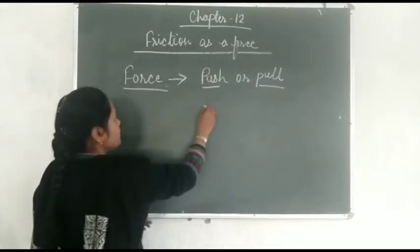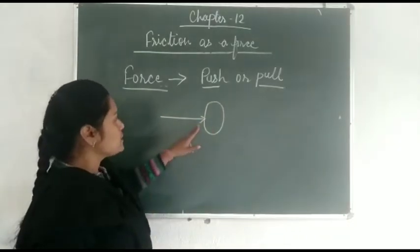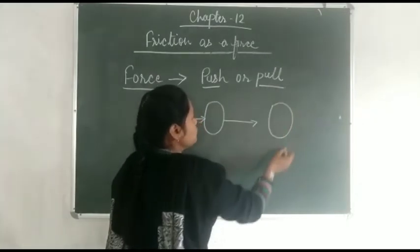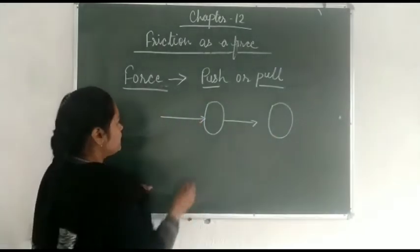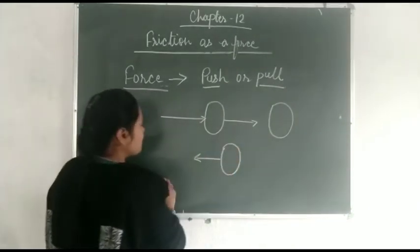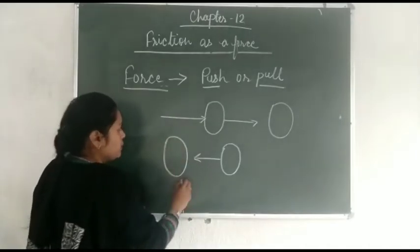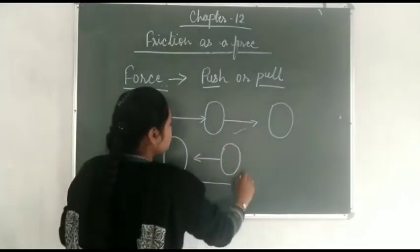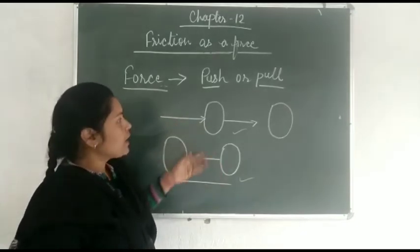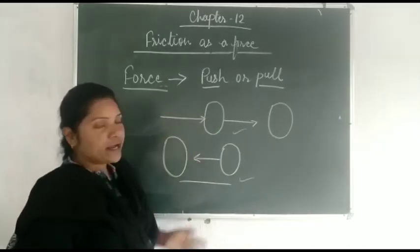When we try to push an object, what happens? It moves away — means it changes its position. Similarly, if we want to pull an object, what happens? It moves towards us. In both conditions — push or pull — we apply some force. So, force is a push or pull acting on an object.